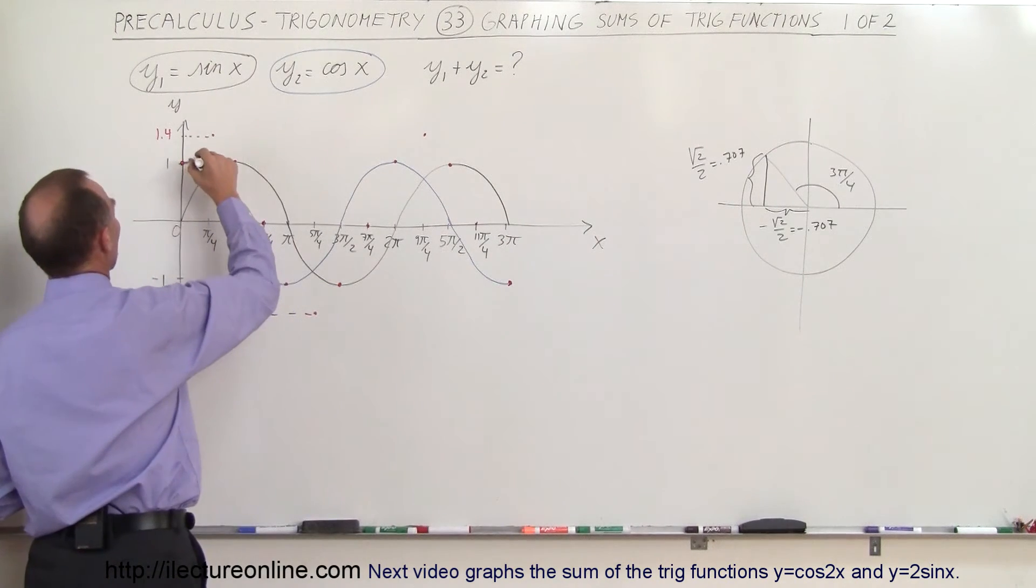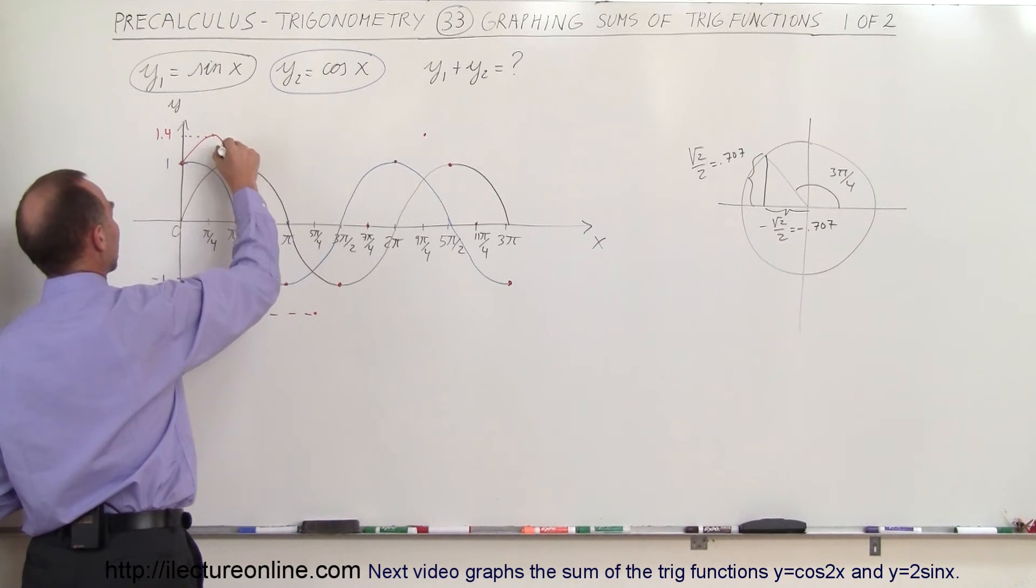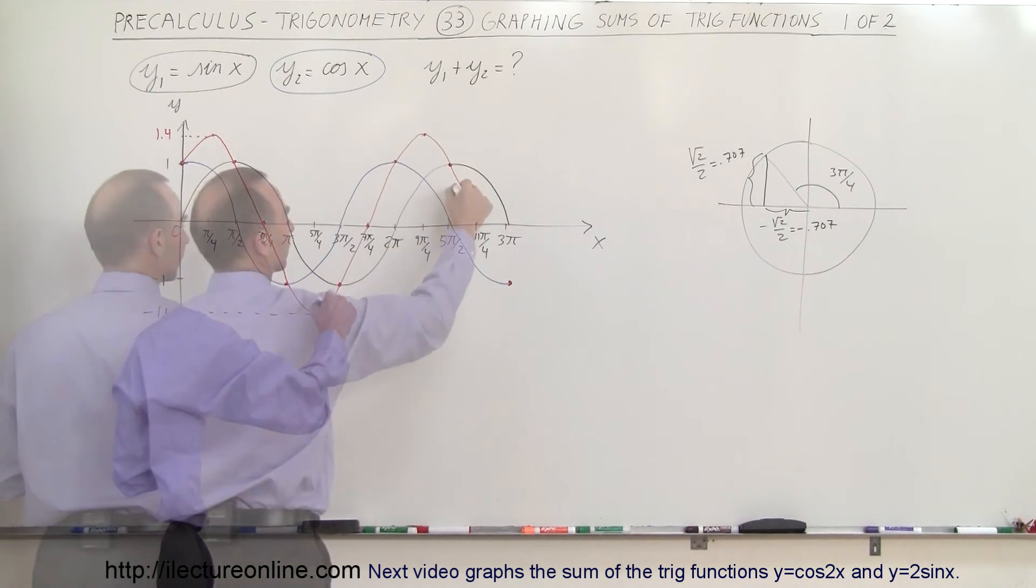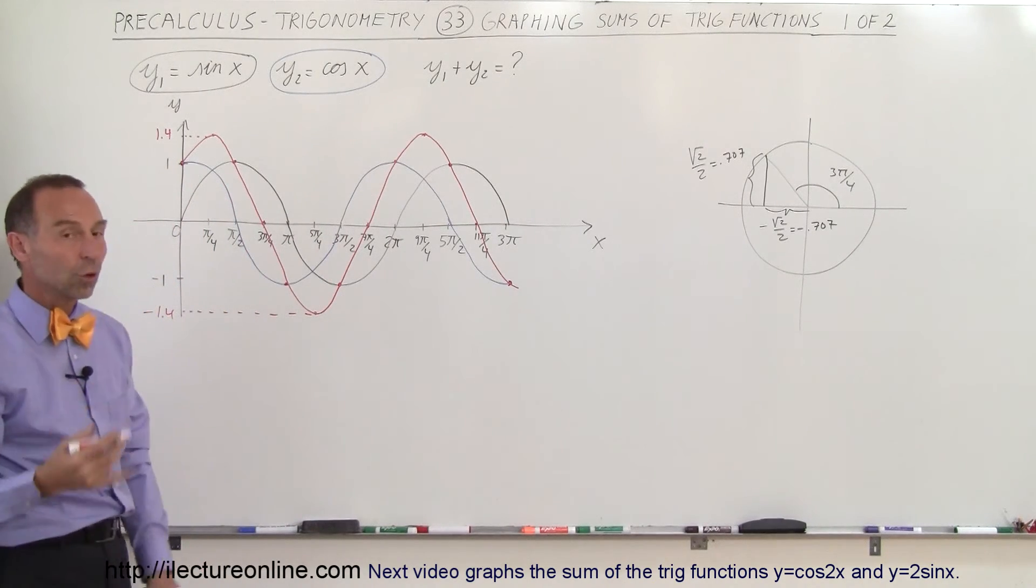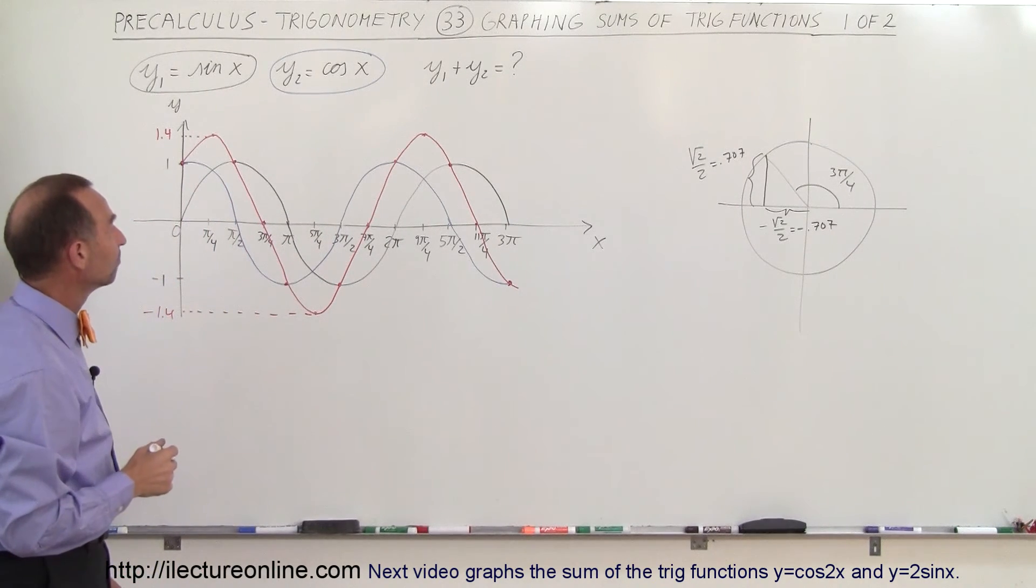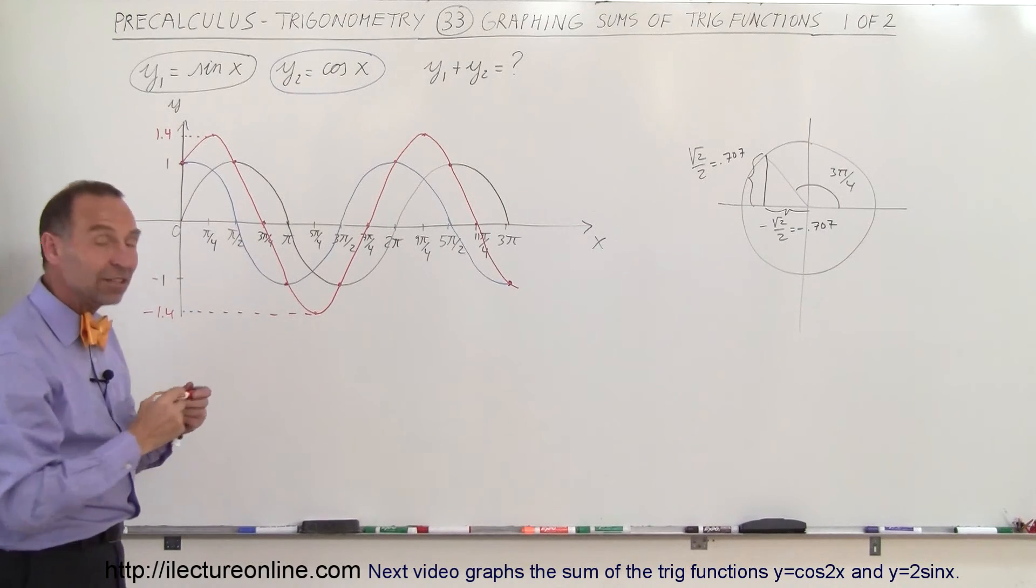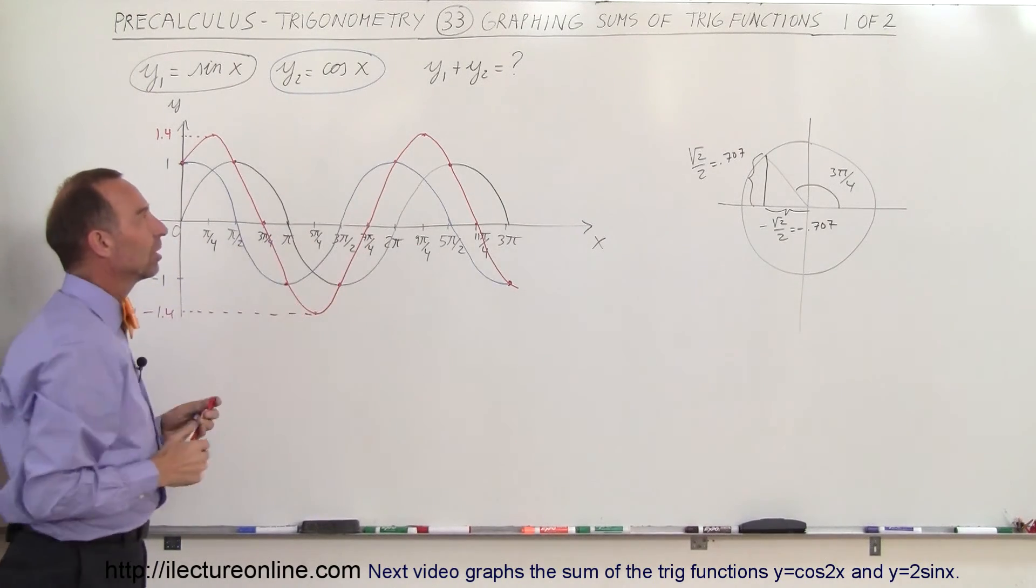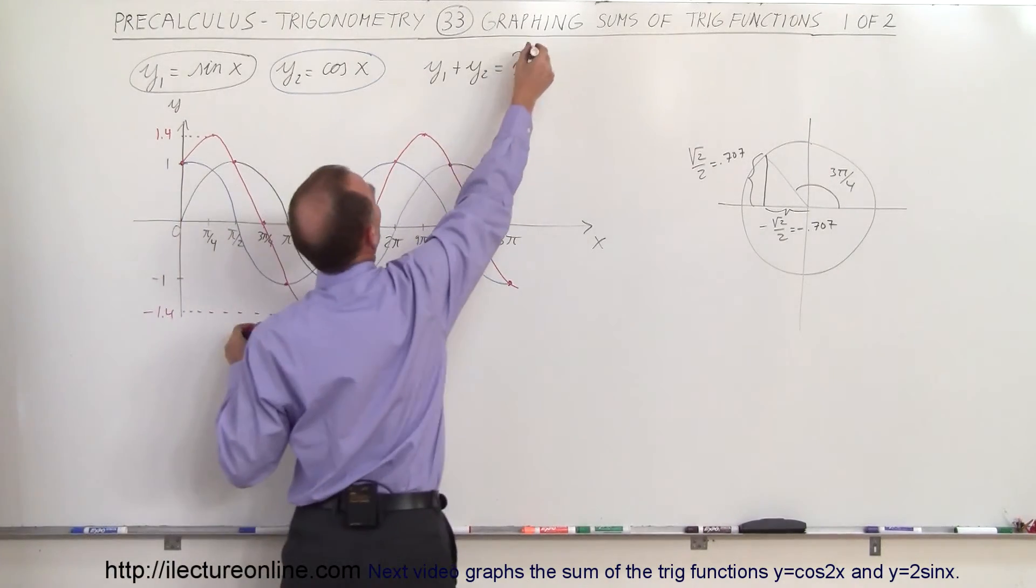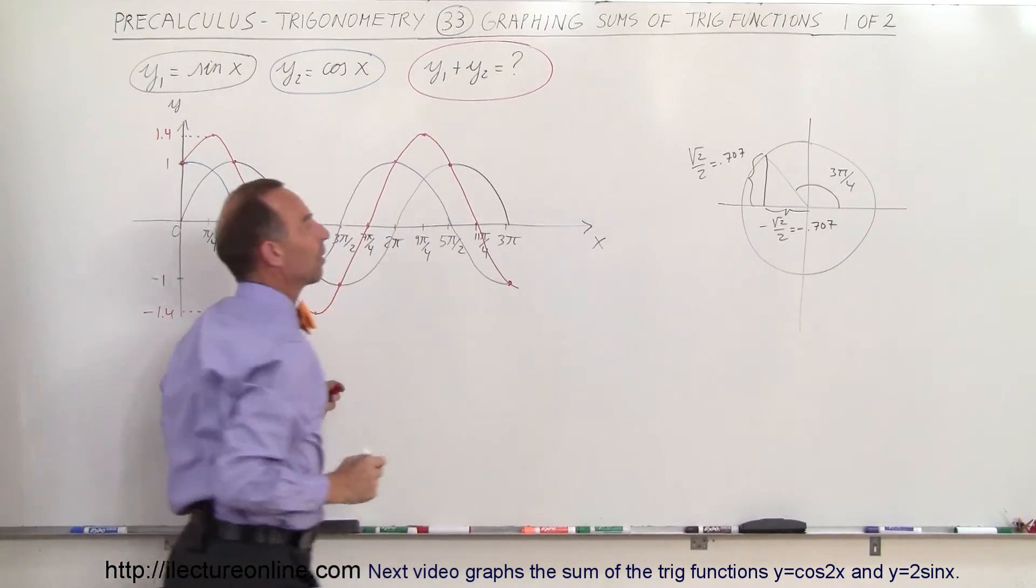So when we connect all the red dots, we get something that looks like this. And so that would be the sum of the cosine and the sine added together. Some of the details may be missing, but at least we have the general form of that summation. And that's how we do that.